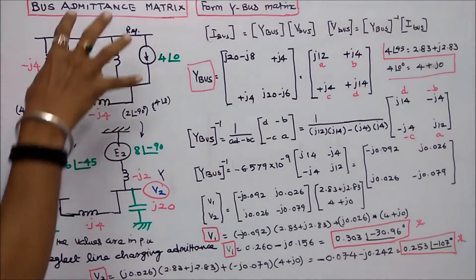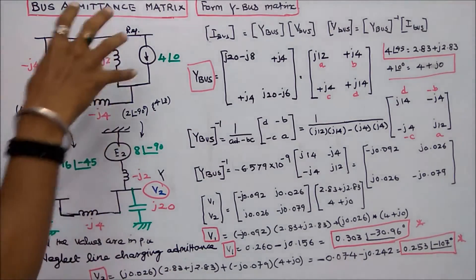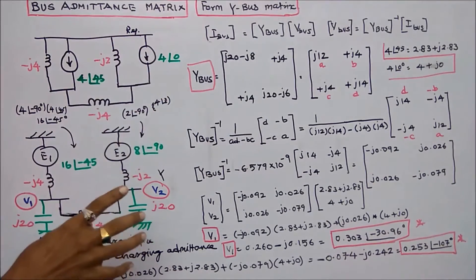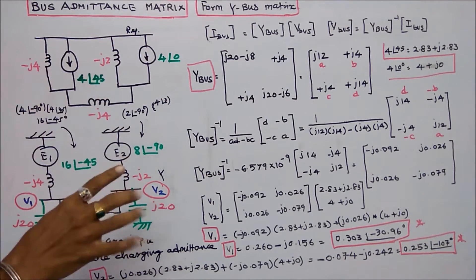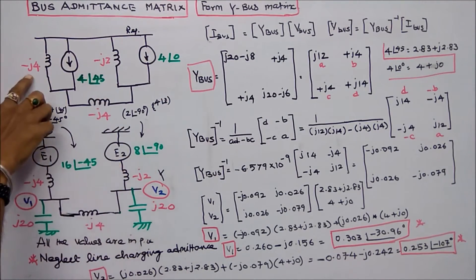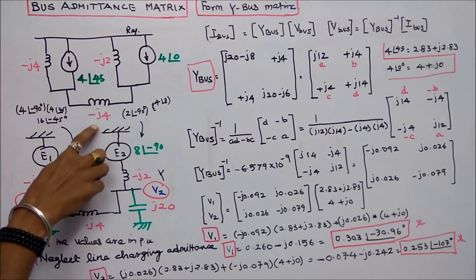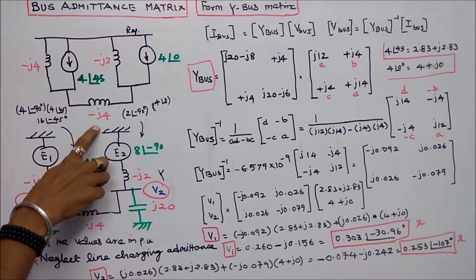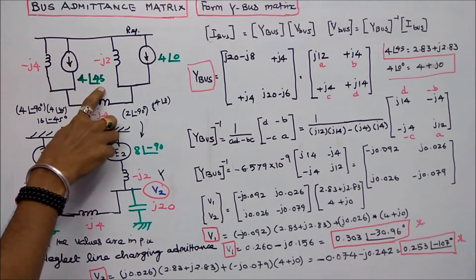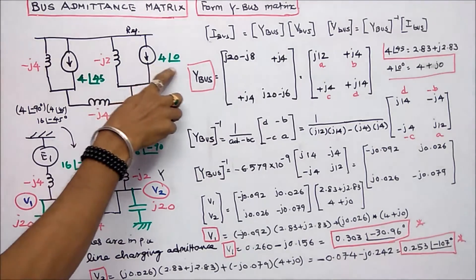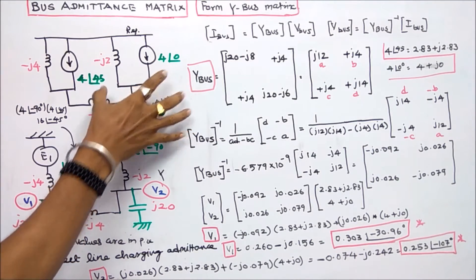This is the given diagram. The system consists of two current sources and three inductances: minus J4, minus J2, and minus J4. The current sources are 4 angle 45 degrees and 4 angle 0 degrees. These two are in polar form.